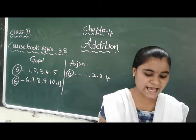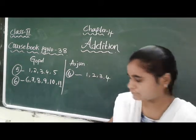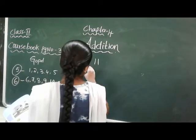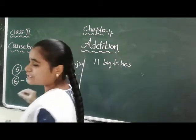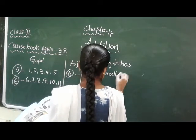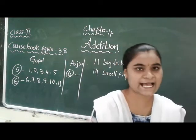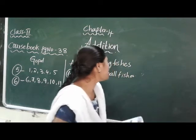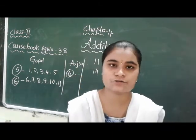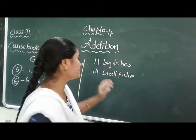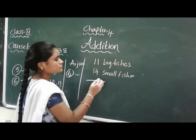I have an aquarium in which there are 11 big fishes and 14 small fishes. So, how many fishes are there altogether? In that aquarium, 11 big fishes and 14 small fishes. To find the total, we will do addition.